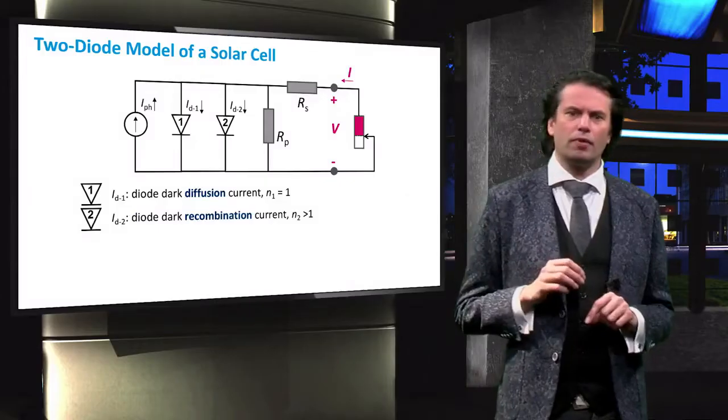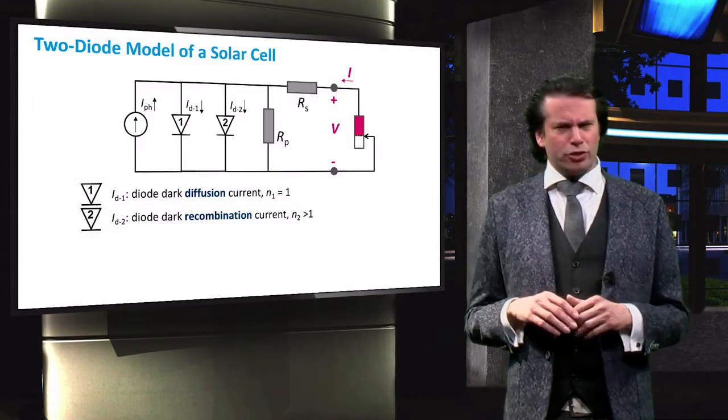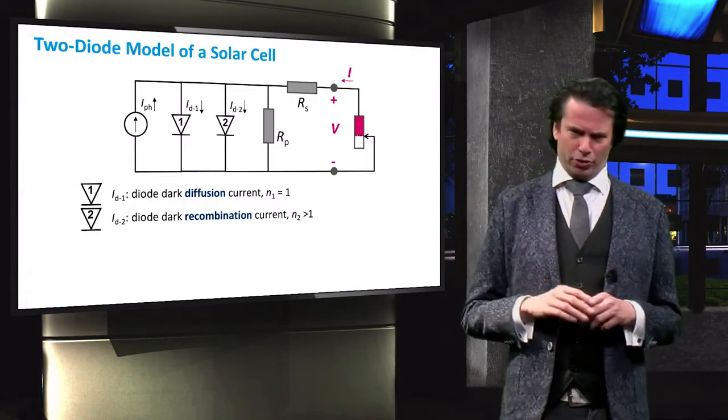Now this single diode model is good for electrically simulating a solar cell. However, sometimes it is insufficient. For this purpose we can increase the model's complexity. Here you can see a very similar schematic to the single diode model, but now there are two diodes.